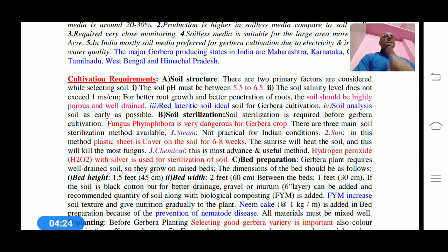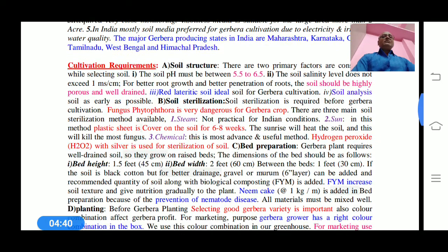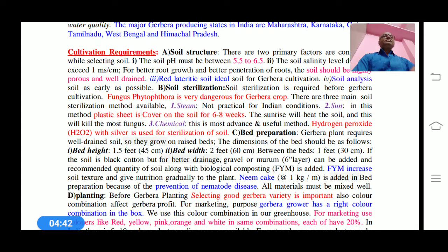This is most important for better root growth and penetration. The soil should be highly porous and well-drained. Each cultivation, particularly floriculture crops, needs a well-drained structure and texture of the soil.